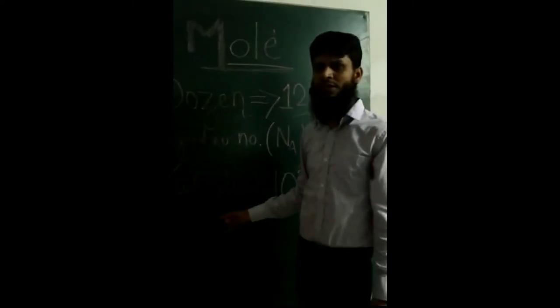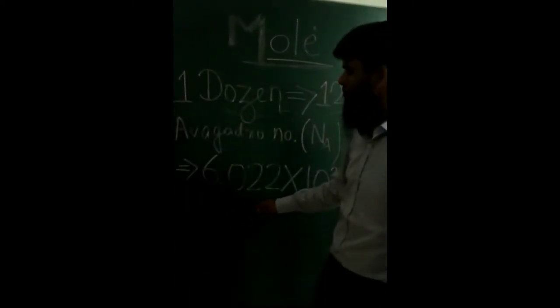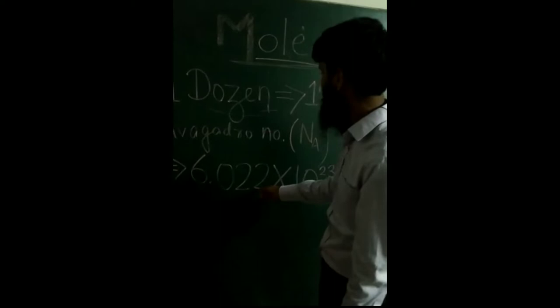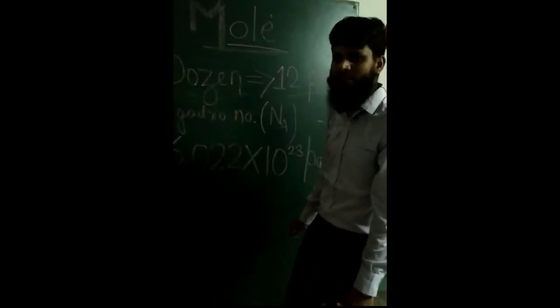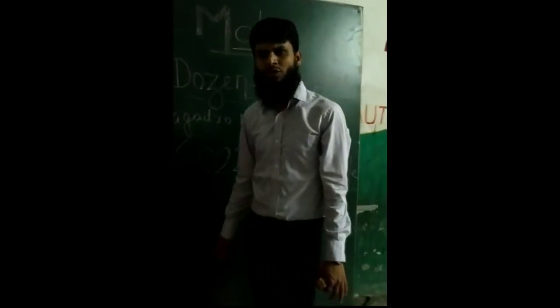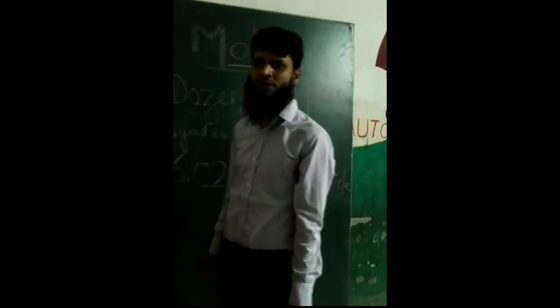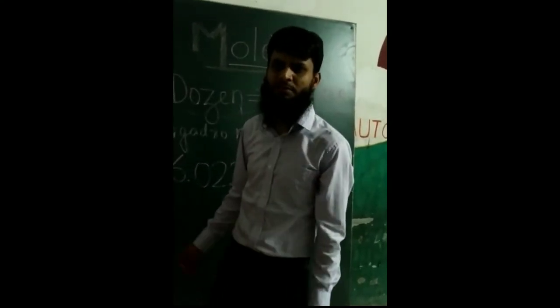It is 6.0602 into ten to the power twenty-three particles — atoms, electrons, protons, molecules, ions — all types of particles.